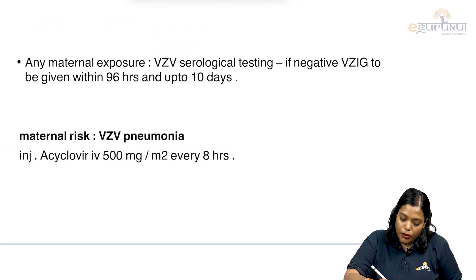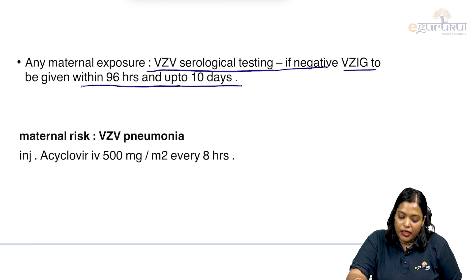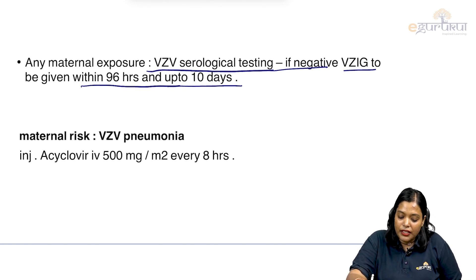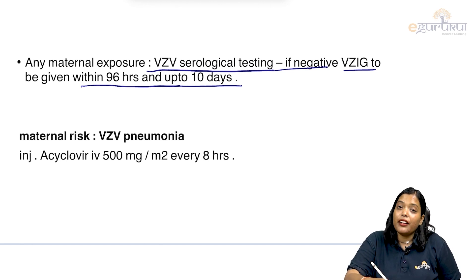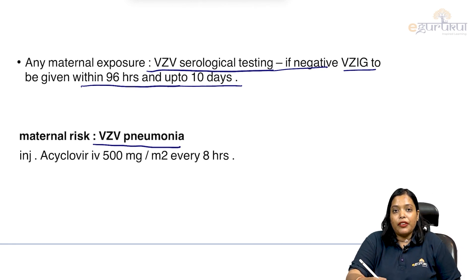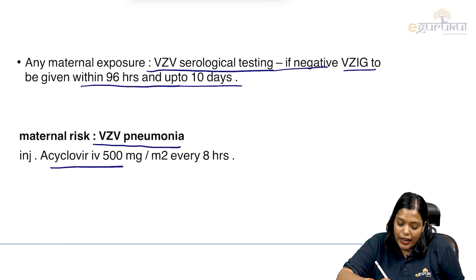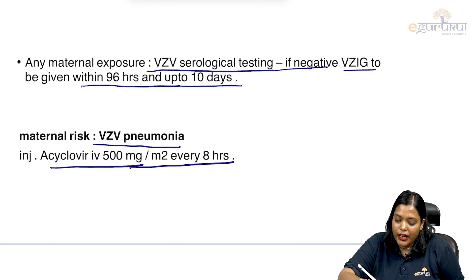For maternal exposure, varicella zoster serological testing should be done. If negative, varicella zoster immunoglobulin should be given within 96 hours and up to 10 days. The mother also has a risk of developing varicella zoster virus pneumonia. For the mother, acyclovir IV 500 mg per meter square every 8 hours should be given.